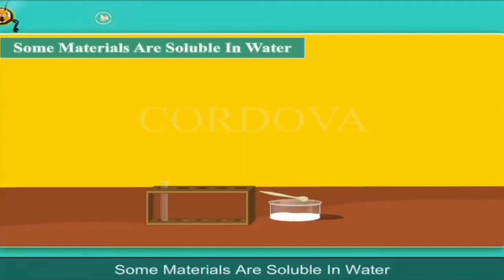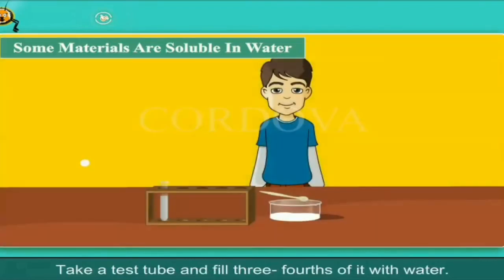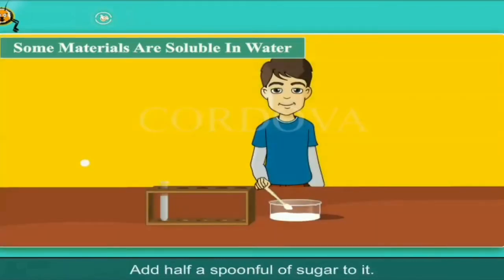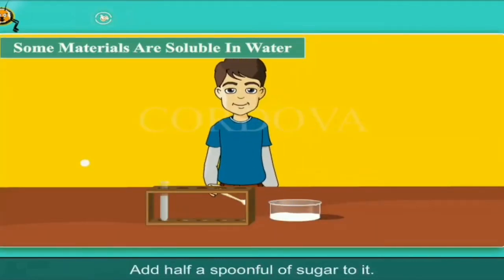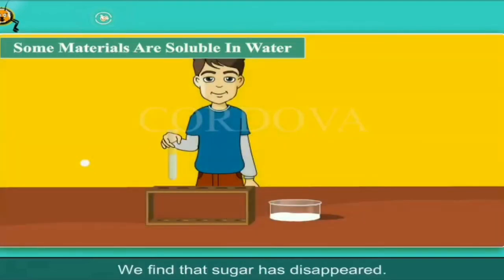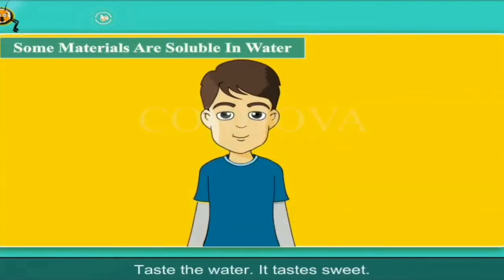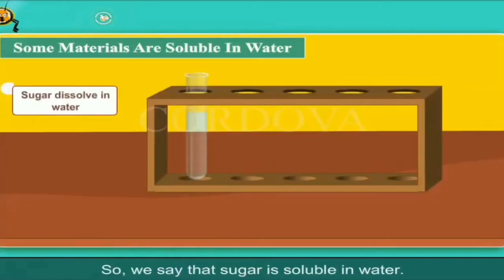Some materials are soluble in water. Take a test tube and fill three-fourths of it with water. Add half a spoonful of sugar to it. Shake the test tube well. We find that sugar has disappeared — taste the water and it tastes sweet. This is because sugar has dissolved in it. So, we say that sugar is soluble in water.